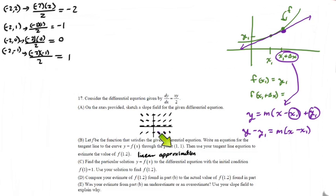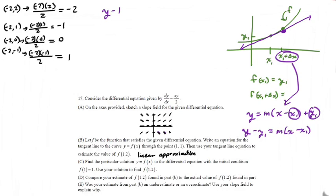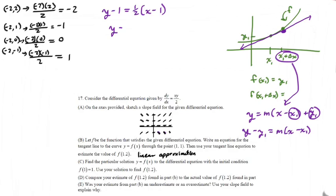That's exactly what we're going to do with this problem. There's our point — it's 1, 1. Where's our slope? We plug 1, 1 into the differential equation and that gives us the slope at that point. So let's write our tangent line equation. It would be Y minus 1 equals slope times (X minus 1). Plugging 1, 1 into the differential equation: 1 times 1 divided by 2 gives us 1 half. So our tangent line equation is Y minus 1 equals 1 half times (X minus 1).